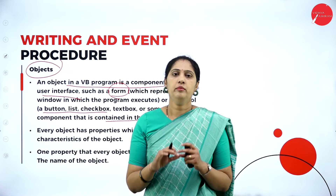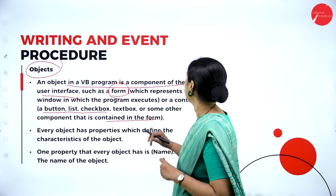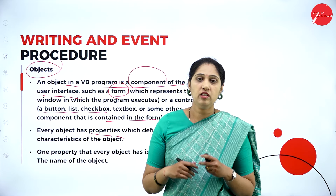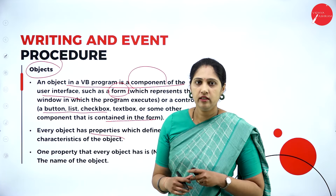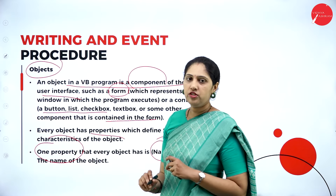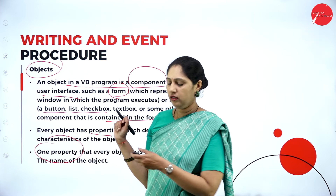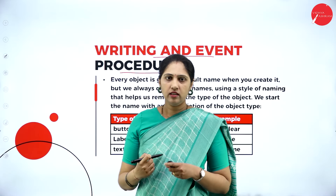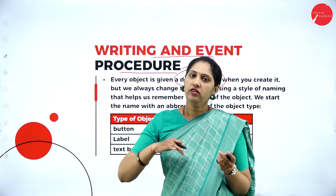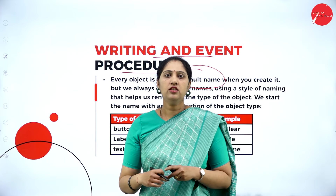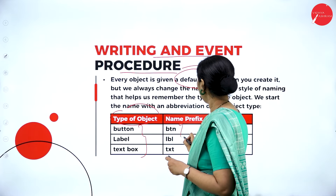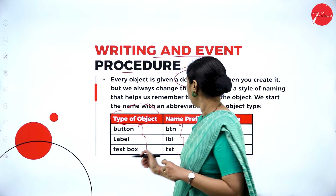What is an object in VB? An object in a VB program is a component — we call it a control — such as a form. Even a form is an object. A button, list, checkbox — whatever is in your toolbox that is contained in the form. You cannot take a button as it is; you must place the button inside your form. The form itself is a component.